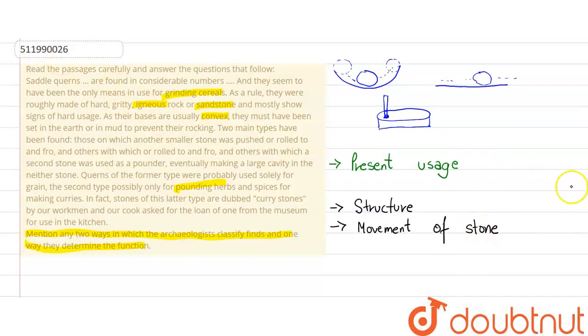The stone's movement could show its present usage. Also, there's the structure and the movement of stone. Like circular movement, this was moving to and fro.